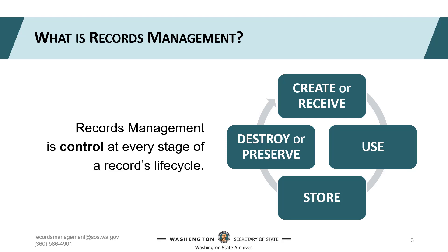A record is active when it's supporting your current work. In the use stage, you might share active records over email or edit them in a shared drive. For those records to be useful to your agency, they need to be organized for accessibility. A records inventory is an excellent tool to identify what already exists, where it's stored, and how long it needs to be kept. While in the use stage, you'll want to explore adopting tools to simplify organization and access. After you are done using a record, it moves into storage — this is where retention comes in.